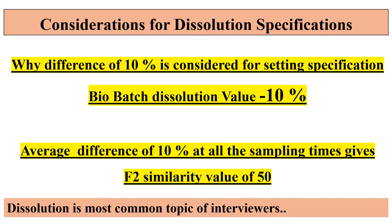In Part 1, you might have understood the Q values and how these are set based on the bio batch values. You might have a question: why is a difference of 10% considered while setting the specifications? We use the bio batch value, subtract 10% from that value, and the resulting value is given as the Q value or Q percentage as a specification. This is because an average difference of 10% at all the sampling times gives an F2 similarity value of 50, which is the minimum F2 value required for dissolution similarity.